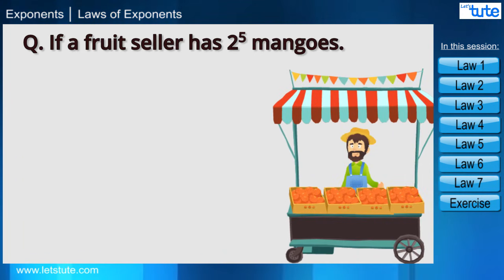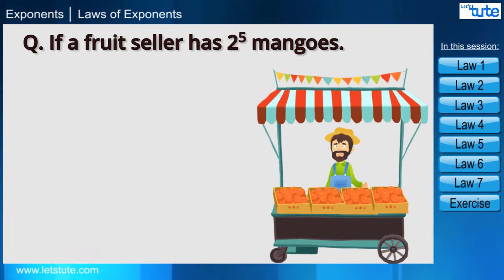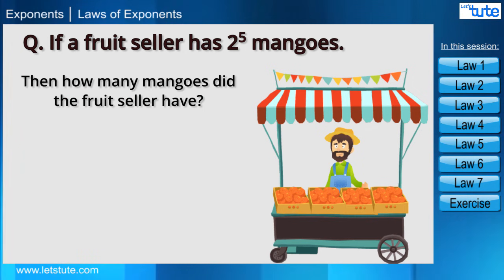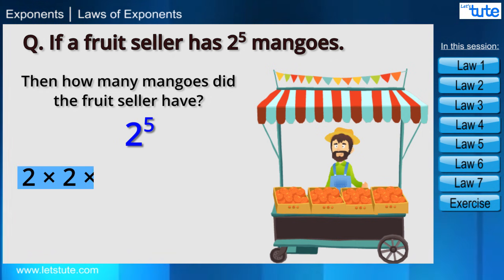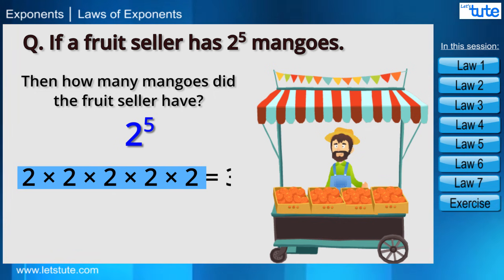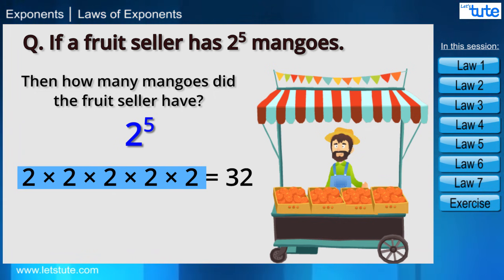Let's take another example — try it yourself. If a food seller has mangoes, how many mangoes did the food seller have? 2 raised to the power 5 means we multiply 2 five times, which equals 32.